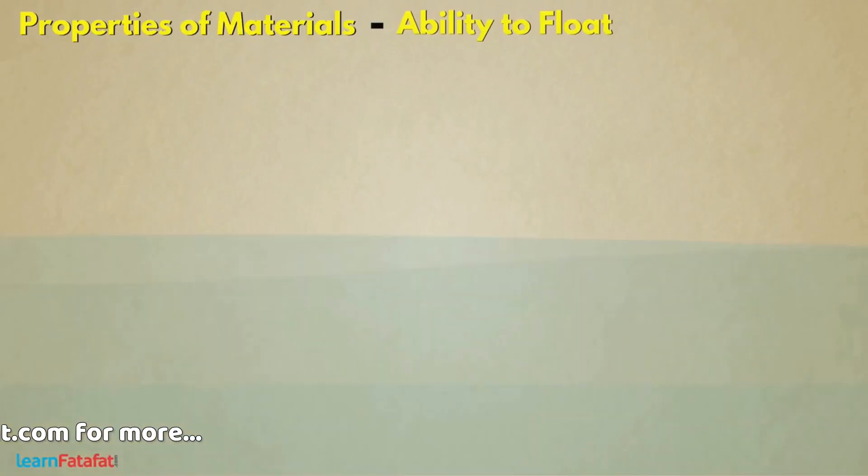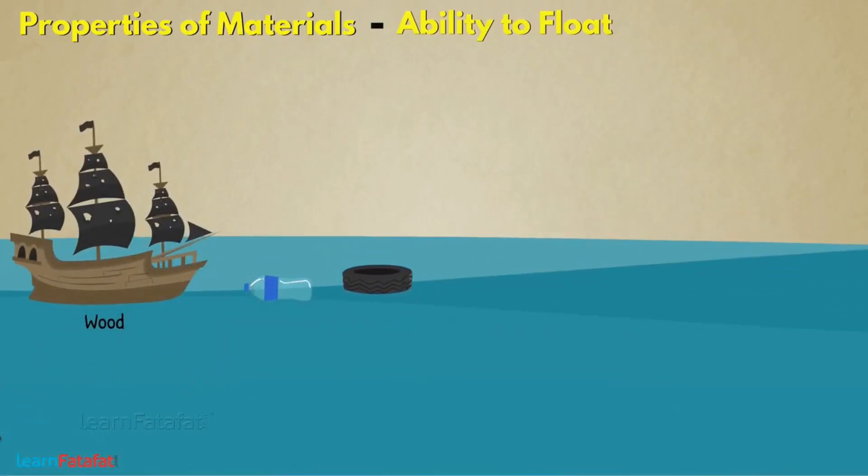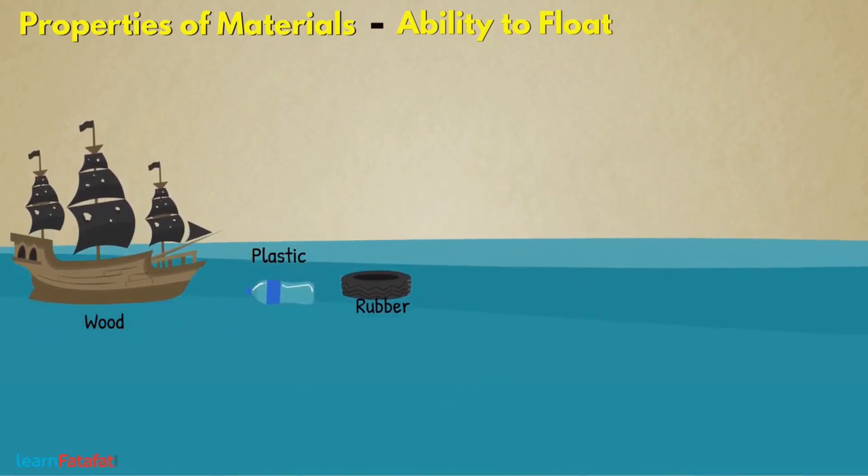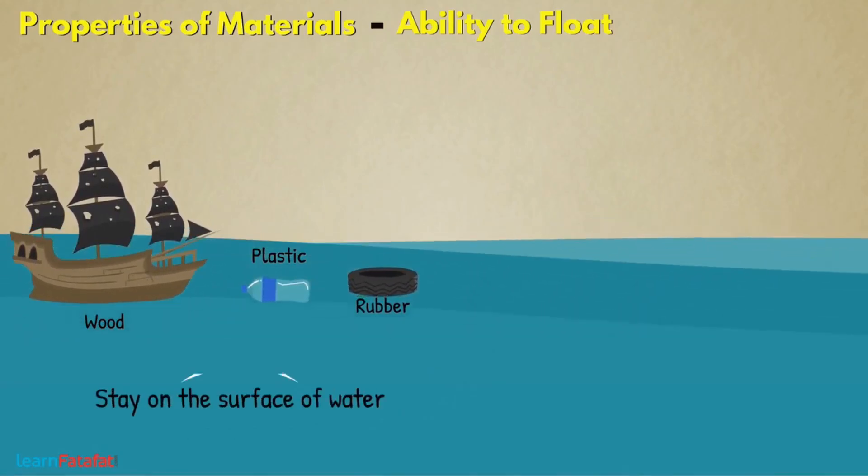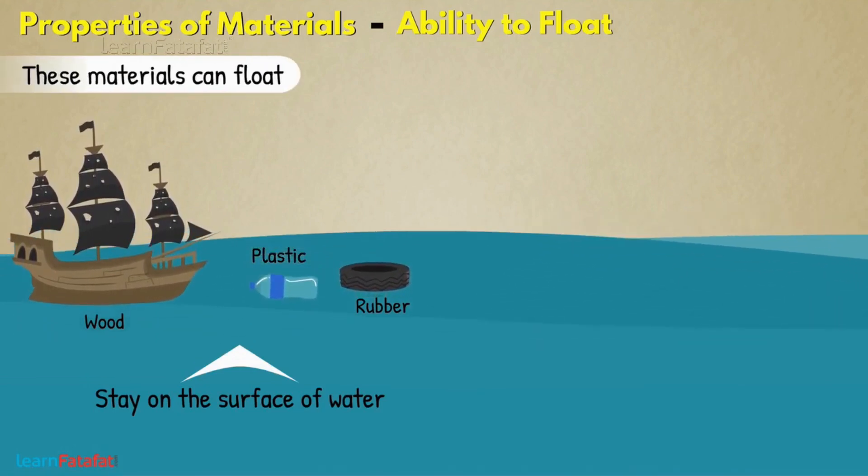Ability to float: Some materials such as wood, plastic, rubber, etc. have the ability to stay on the surface of water. We say that these materials can float on water.